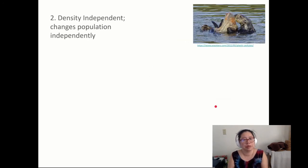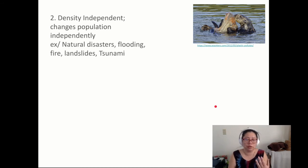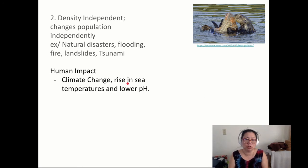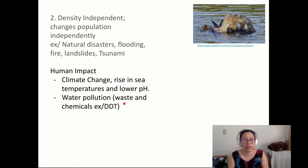Density-independent factors change a population independently of resources. These include natural disasters, temperatures, flooding, landslides, and tsunamis. In general, humans do affect climate change, which can be a density-independent factor — for example, the rise in sea temperatures and lower ocean pH, water pollution, and chemicals like DDT.